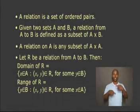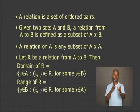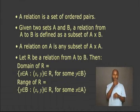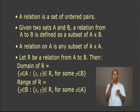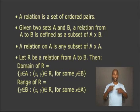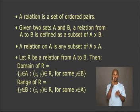First, let us review what we have already learned about relations. A relation is a set of ordered pairs. Given two sets called A and B, a relation from A to B is defined as any subset of A cross B. A relation on A is any subset of A cross A.